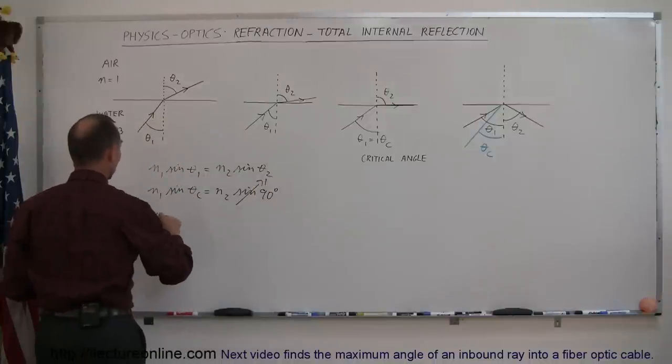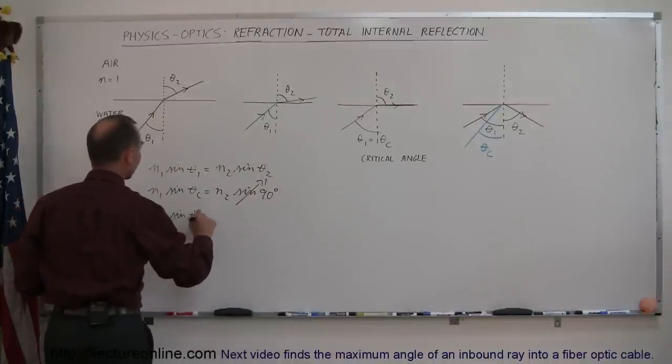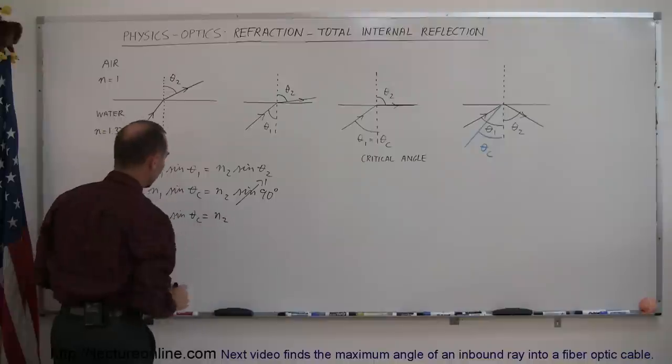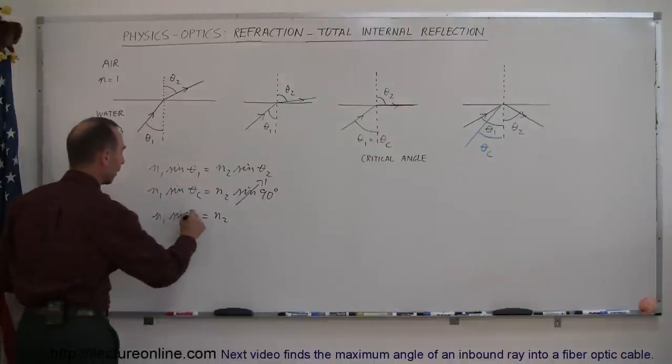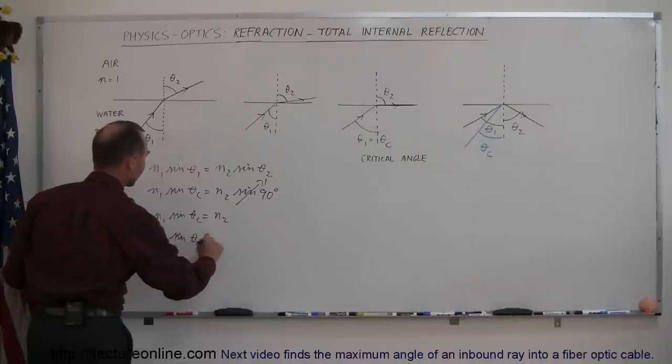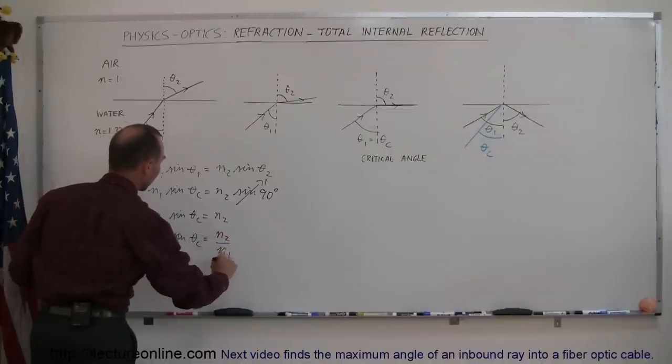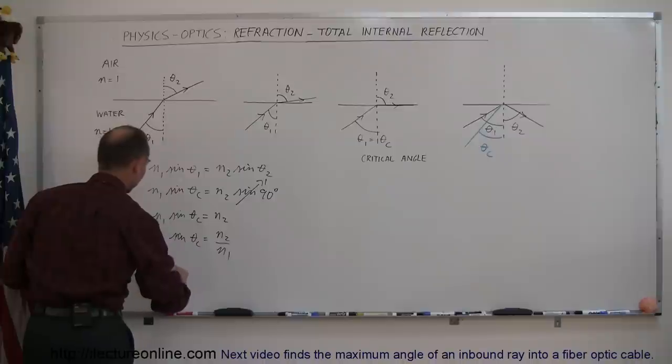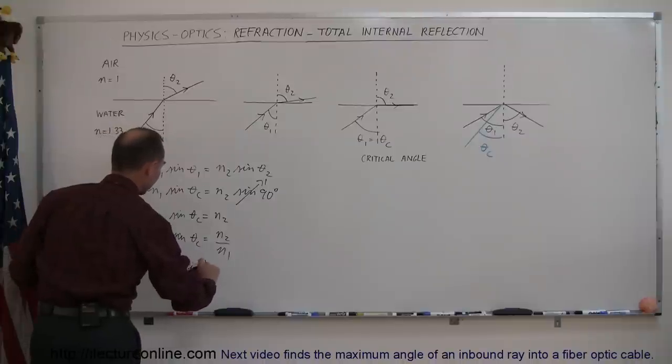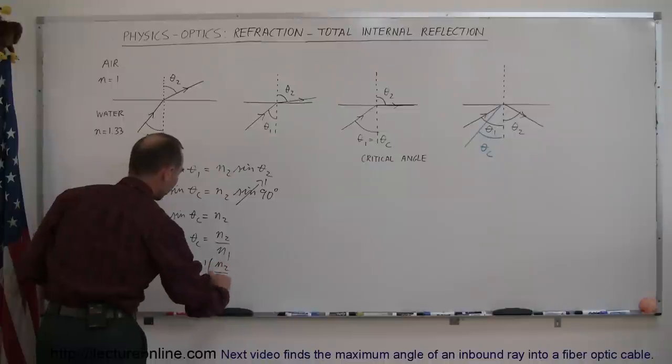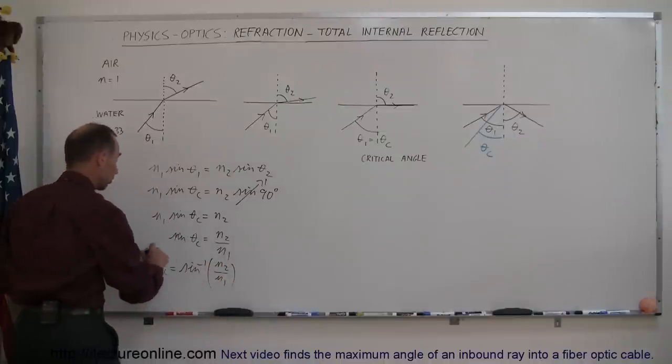And so this can now be written as N1 sine of the critical angle is equal to N2. Dividing both sides by N1 we get the sine of the critical angle is equal to N2 over N1. And finally the critical angle can be found by taking the arc sine of N2 over N1. That's the general equation.